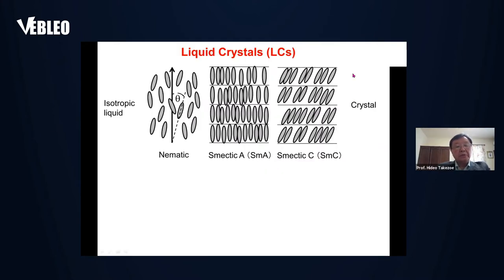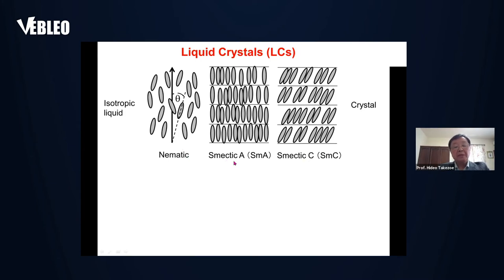First, I want to briefly introduce what liquid crystals are. Liquid crystal is a matter emerging between isotropic liquid and crystal, and the constituent molecule is an anisotropic-like rod or disk. In the rod-like molecular system, there are typically three different kinds of phases: nematic, smectic A, and smectic C. In the nematic phase, there is only orientational order without any positional order. However, in smectic phases, there is a layered structure — it's a one-dimensional crystal and two-dimensional liquid.